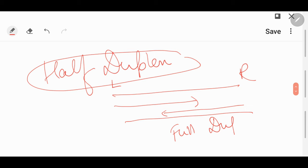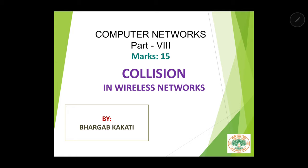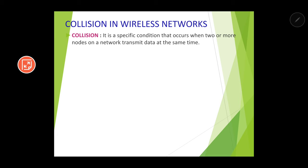Let us assume that our network is a half duplex network. Therefore, transmission and reception cannot happen at the same time. Since transmission and reception cannot happen at the same time, it will lead to something known as collision. We can define collision as a specific condition that occurs when two or more nodes on a network transmit data at the same time — if more than one node transmits data together, it refers to collision.